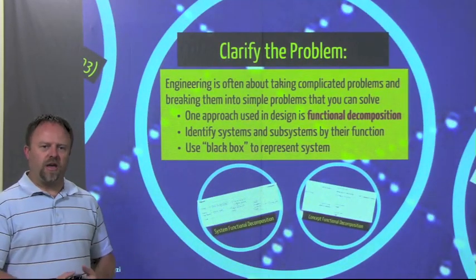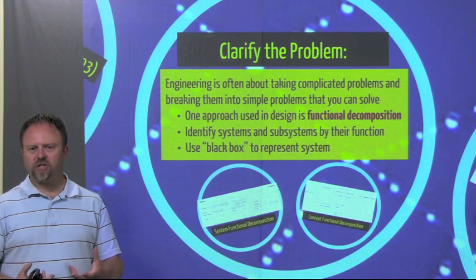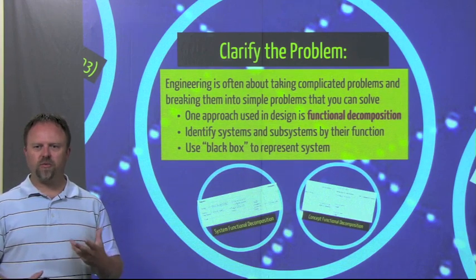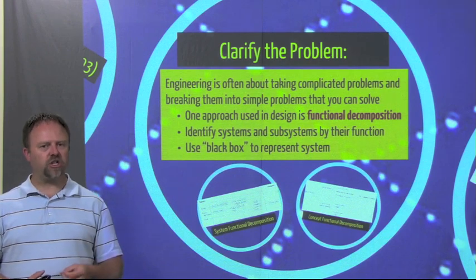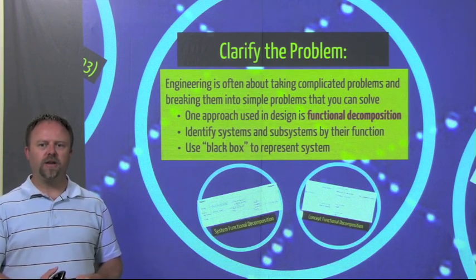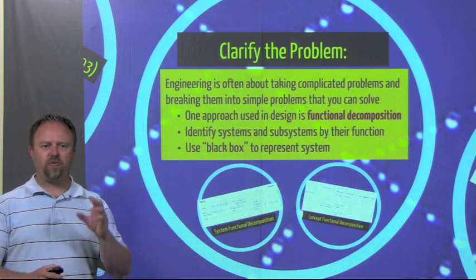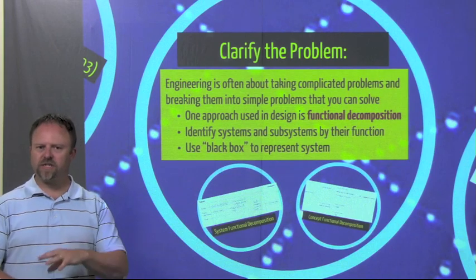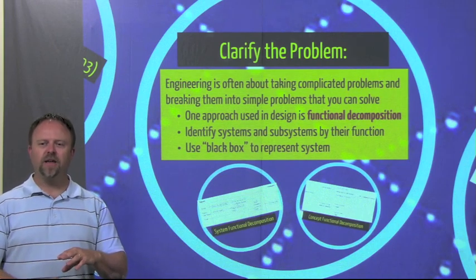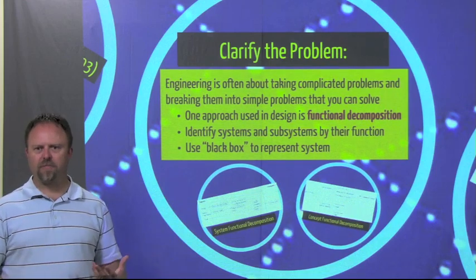In order to clarify our problem, we have to make sure we understand what are the functions that our design needs to do. So one way to do that is to conduct a functional decomposition. That's where we look at our overall design goals, we break it down into steps or functions or individual systems that we have to design, and then we kind of draw that out just as in a black box form.